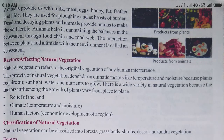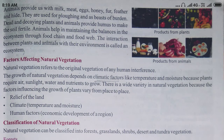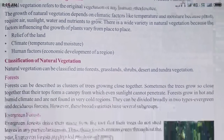Hello students. As you know, we were studying chapter number three, so we'll continue that chapter. Today's topic is factors affecting natural vegetation. There are many factors which affect natural vegetation, such as relief of the land, climate, and human factors — human factors include things like the economic development of a region.